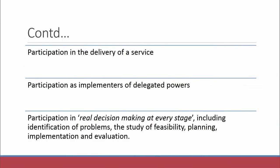The most important level is real decision making at each and every stage. It includes identification of the problem, research, study of feasibility and planning, implementation, and evaluation. Authorities should identify problems hindering the goal of universalization of elementary education in the community, study the feasibility — whether the proposed measures are achievable or what problems will be faced while pursuing that solution.